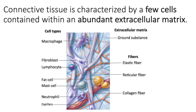When we describe connective tissue, one sentence really just typifies the tissue. That sentence is: connective tissue consists of a few cells contained within an abundant extracellular matrix. If you think of cells as the living component of the tissue and the extracellular matrix as the non-living component of the tissue, you can see that there's a lot more non-living stuff than living stuff.